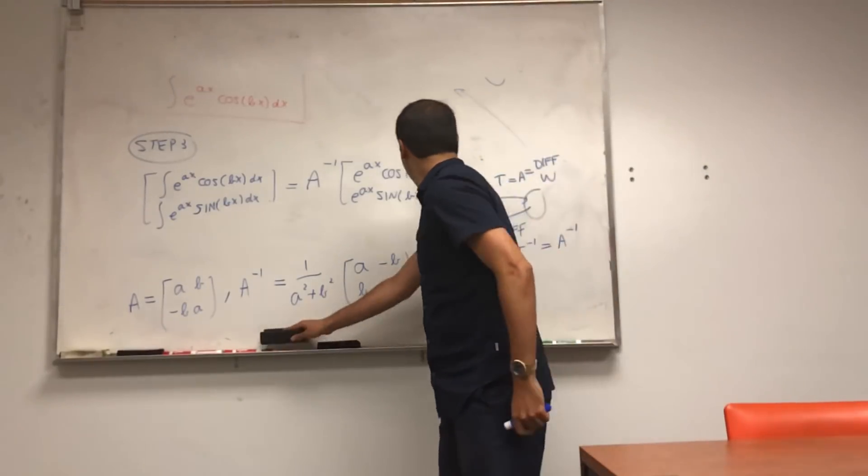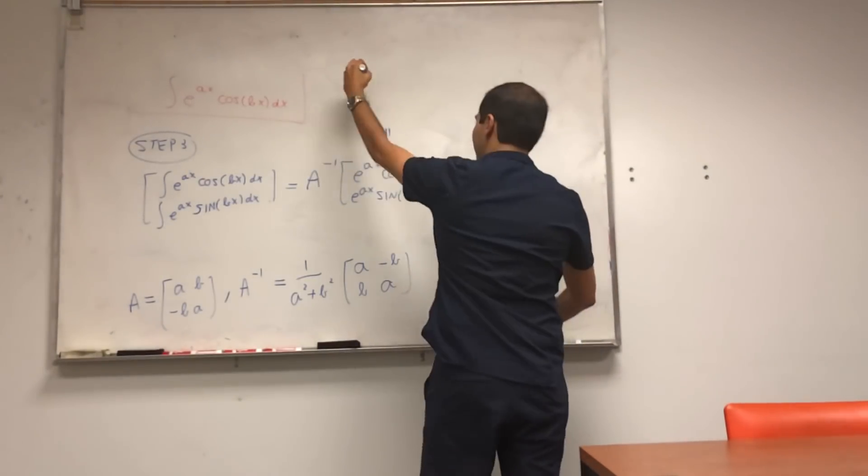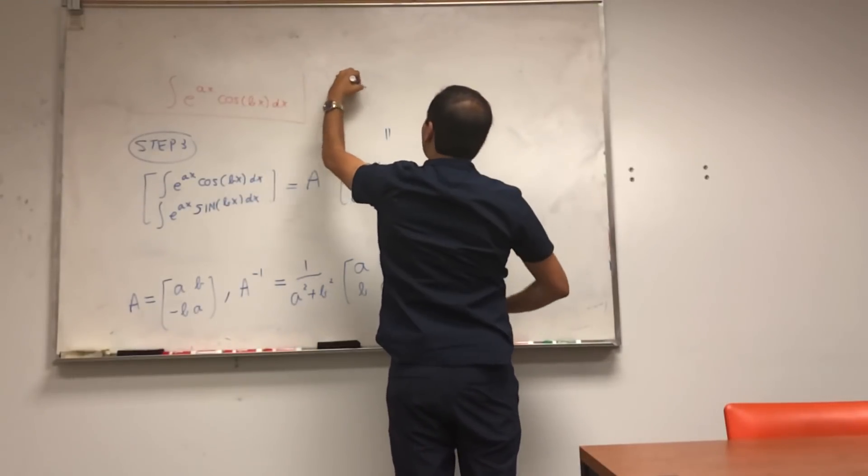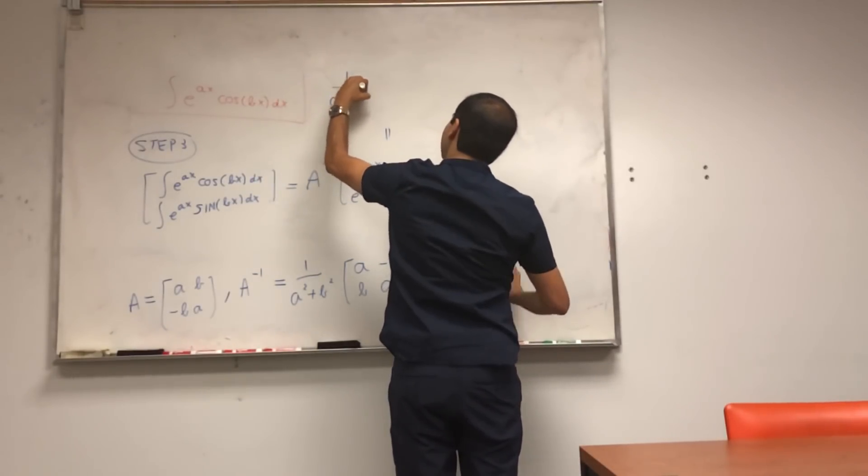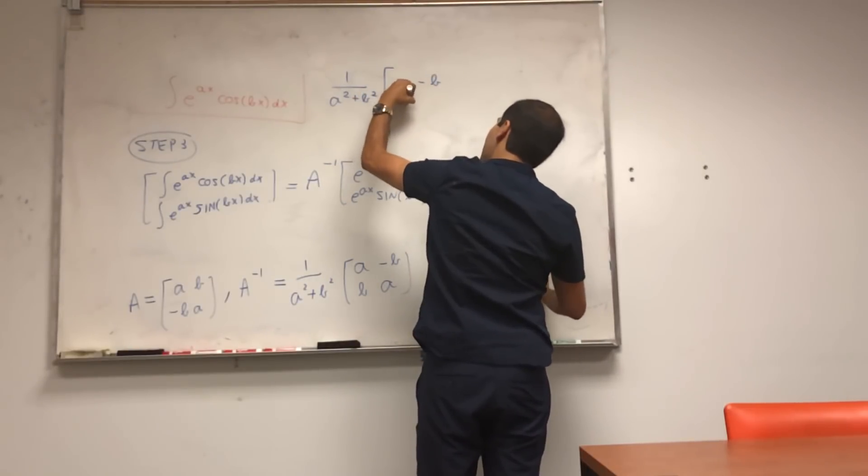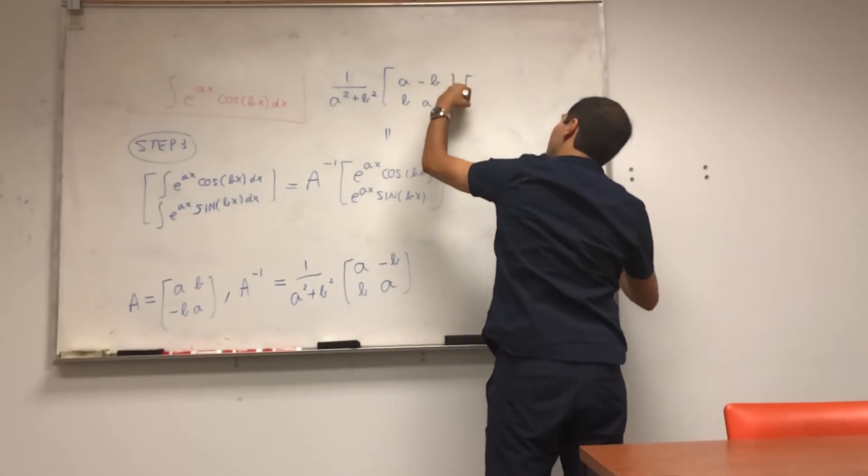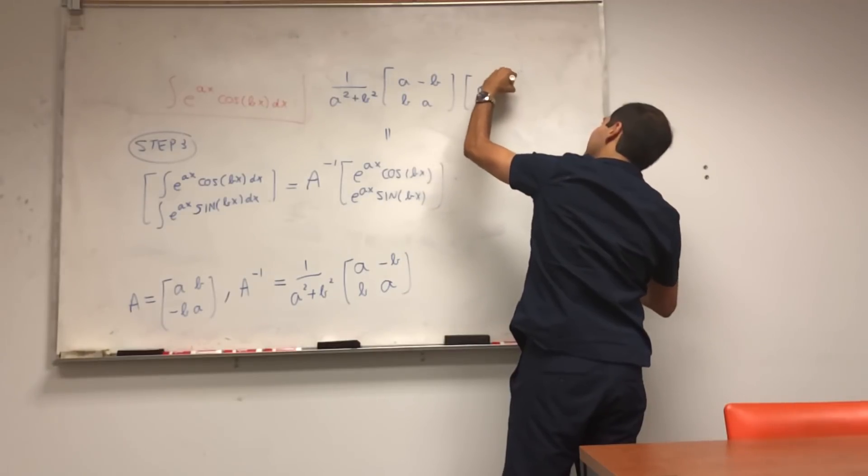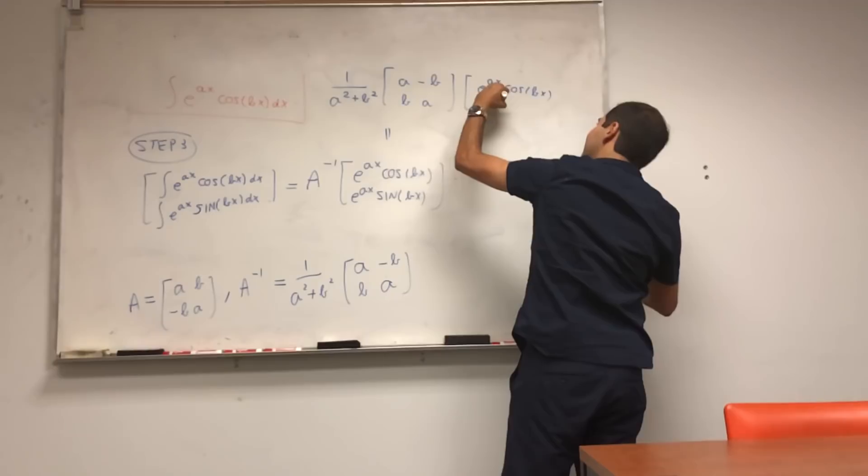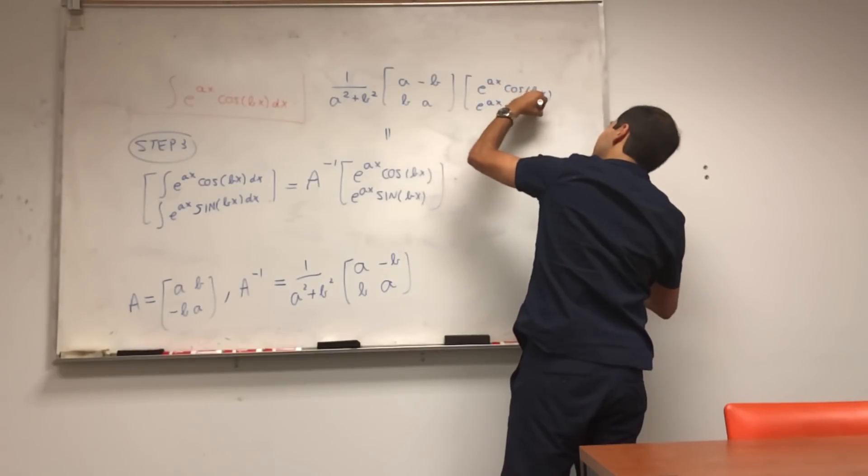So what you're left with, that becomes again 1 over a squared plus b squared, the matrix a, minus b, b, a, of e to the ax cosine of bx, e to the ax sine of bx.